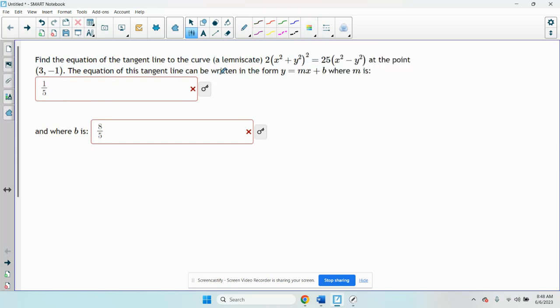This is finding the equation of the tangent line to a lemniscate, which is like a figure eight or infinity symbol, at a specific point. The equation of this tangent line can be written in y equals mx plus b form, where we're trying to find m, the slope from the derivative, and b, the y-intercept.